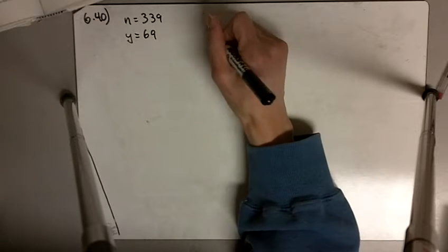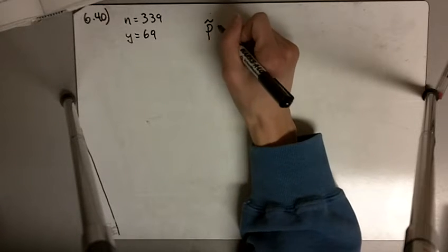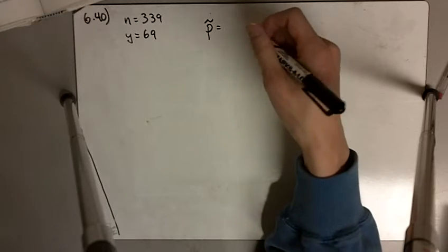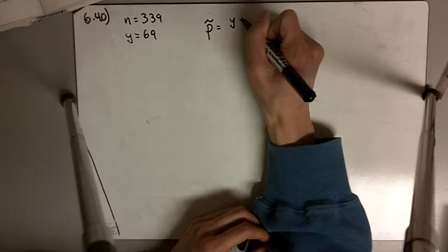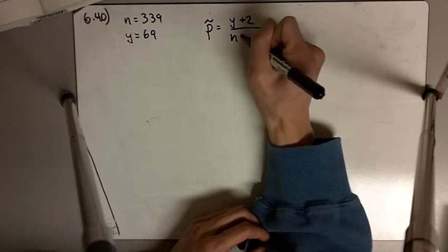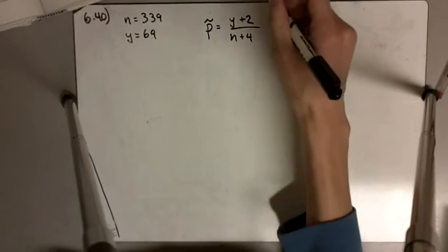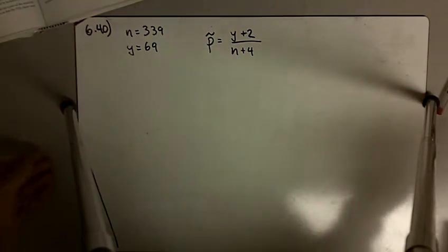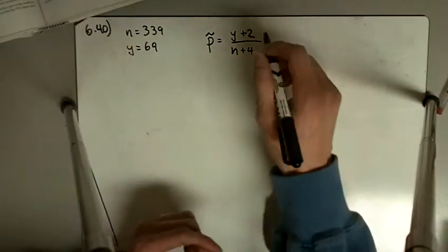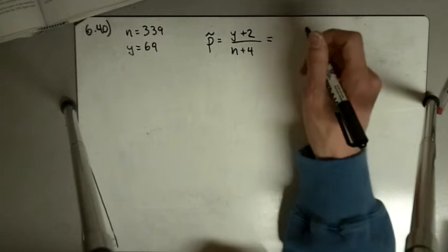So in this case, our p̂ is equal... rather than just doing 69 divided by 339, we have to do (y + 2) divided by (n + 4). And that helps account for the variability due to random chance.